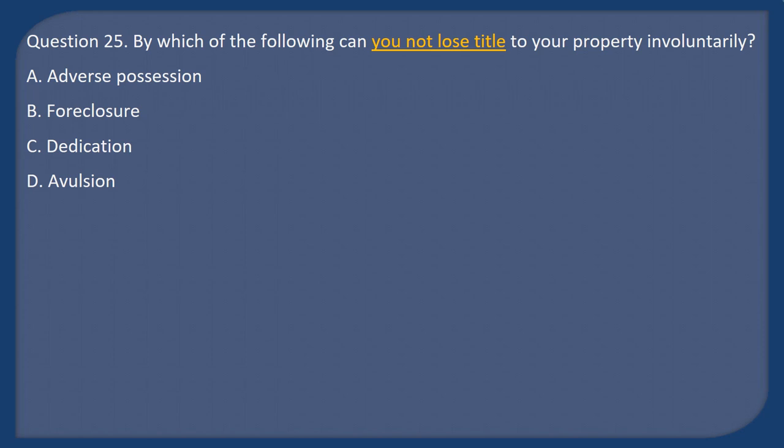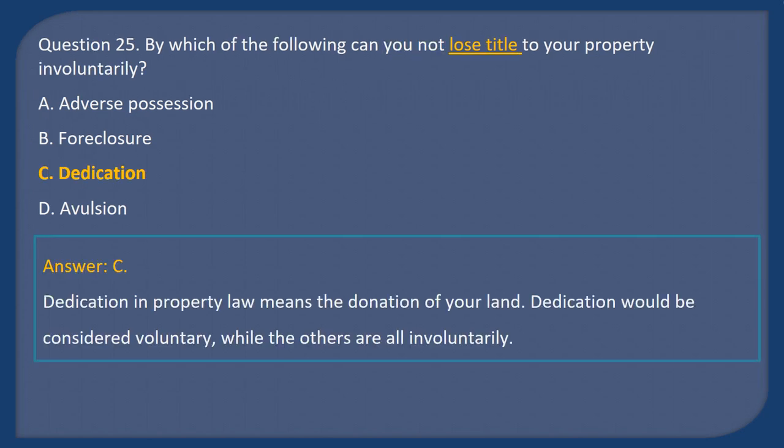Question 25: By which of the following can you NOT lose title to your property involuntarily? A) Adverse possession, B) Foreclosure, C) Dedication, D) Avulsion. Answer: C. Dedication in property law means the donation of your land. Dedication would be considered voluntary, while adverse possession, foreclosure, and avulsion are all involuntary ways to lose title.